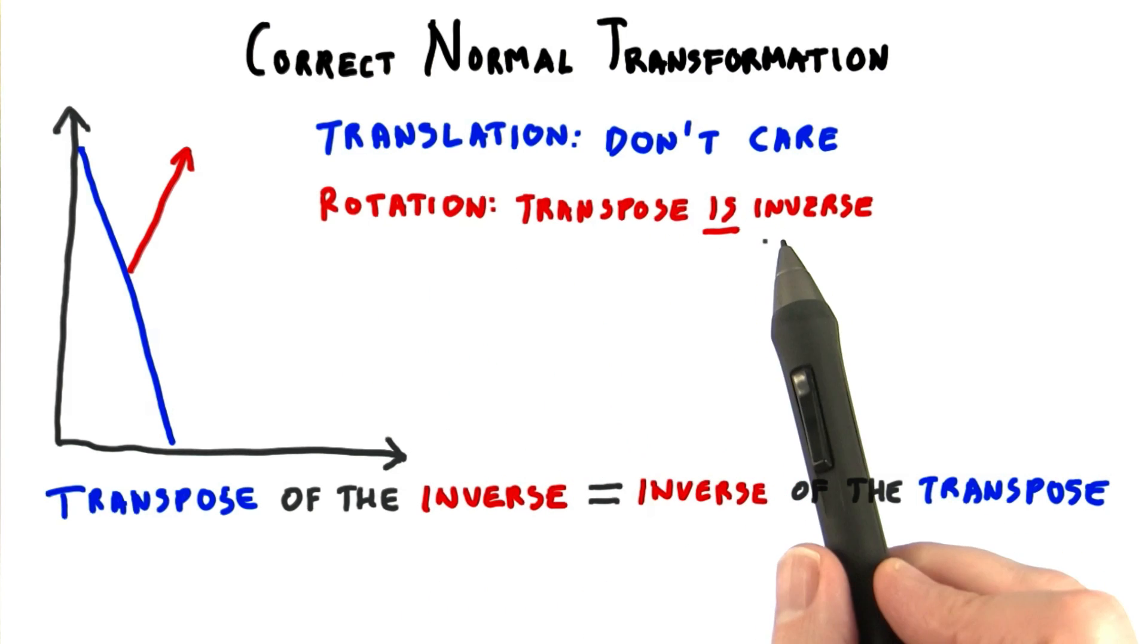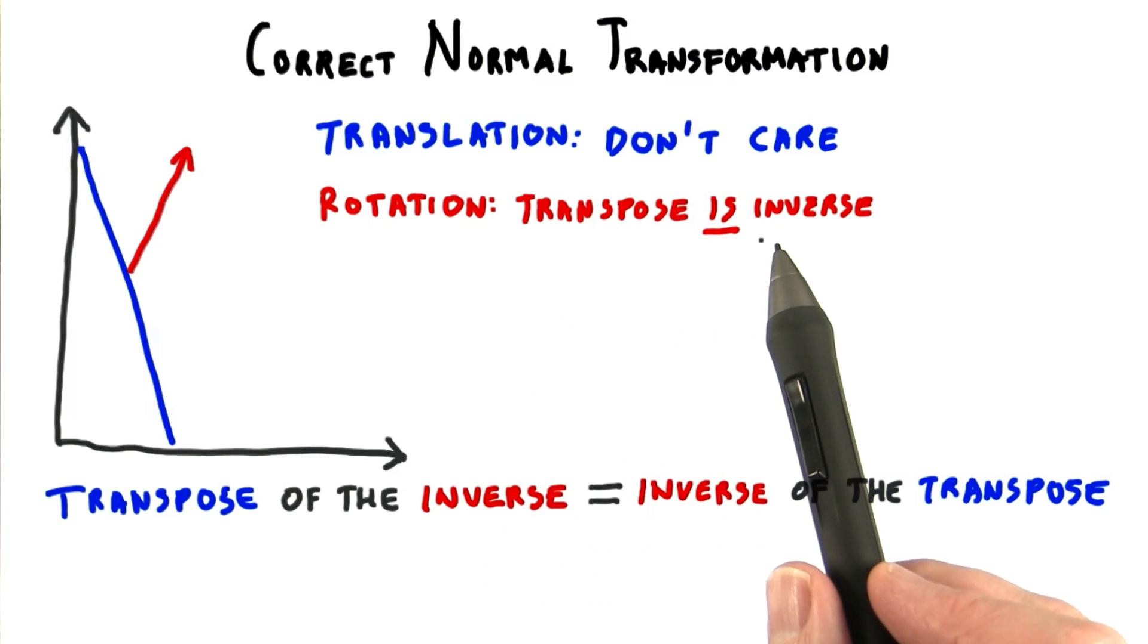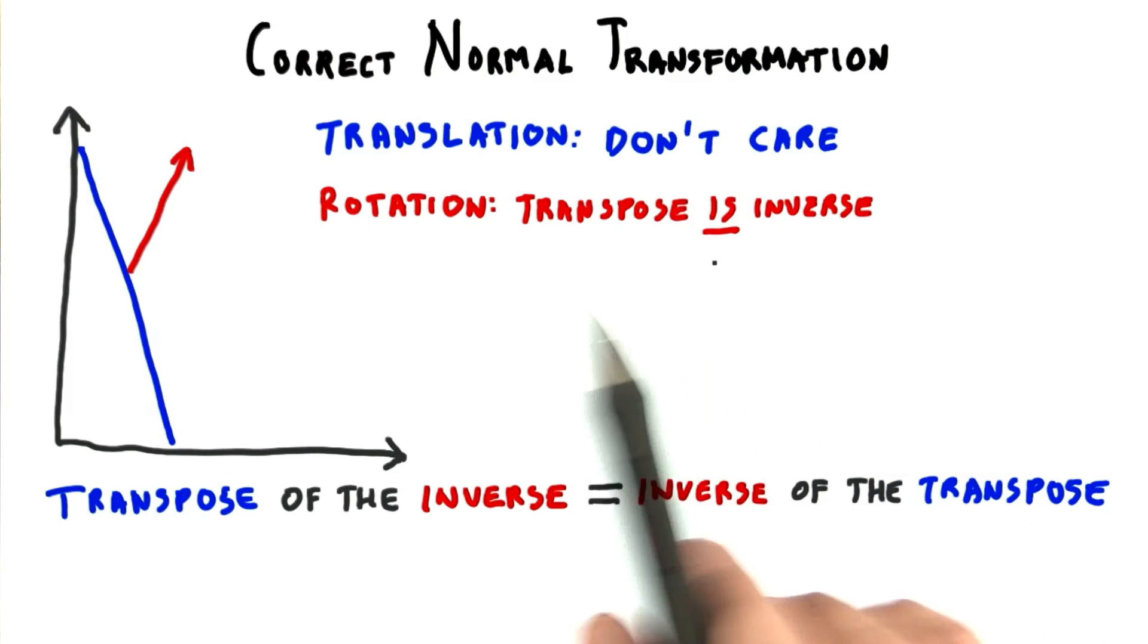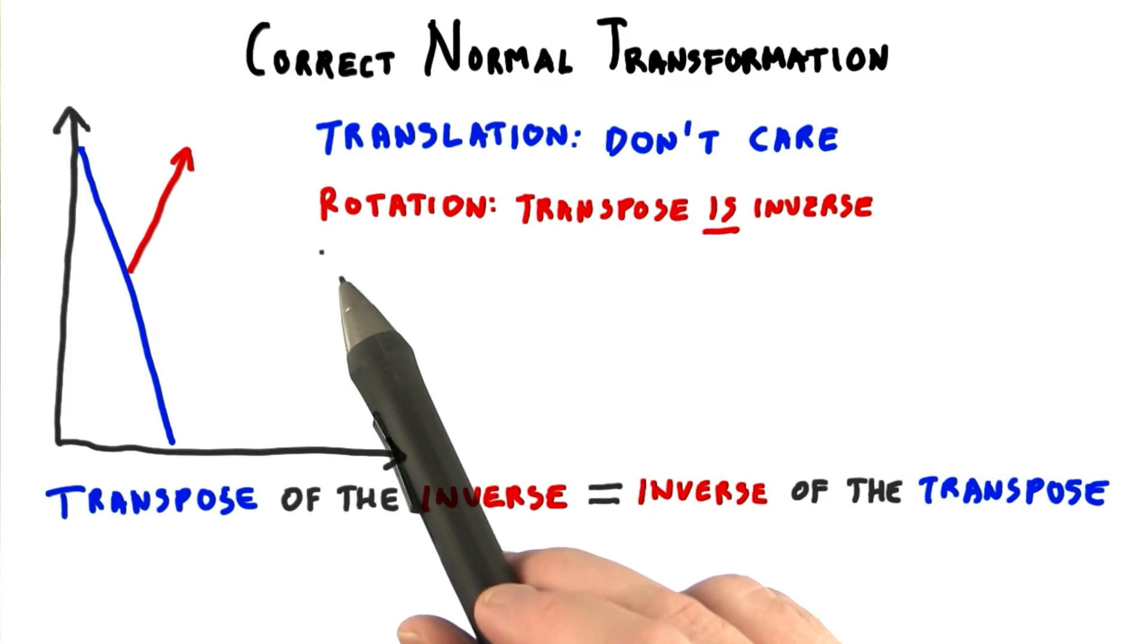For rotation matrices, the transpose is the inverse. The transpose of the inverse, in other words, would be the inverse of the inverse. This is starting to sound a little like Alice in Wonderland. To be a little more clear, if you take the transpose of the inverse of a rotation matrix, you get the same rotation matrix back.